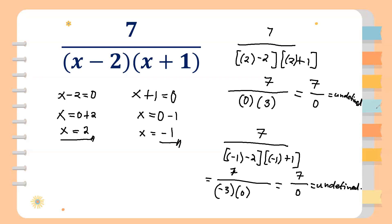First, you just equate the denominator to zero, and then you solve for the variables. Let's have more examples.